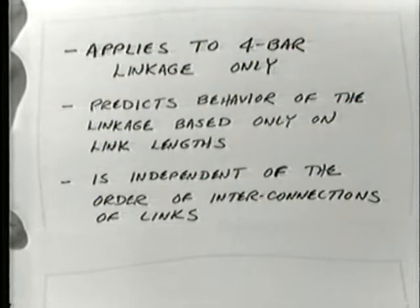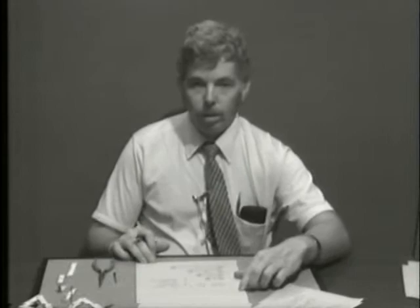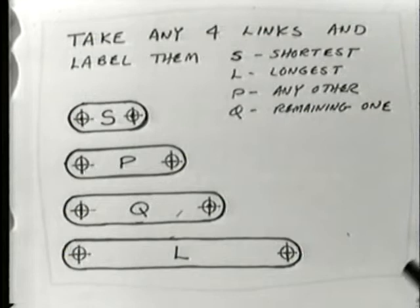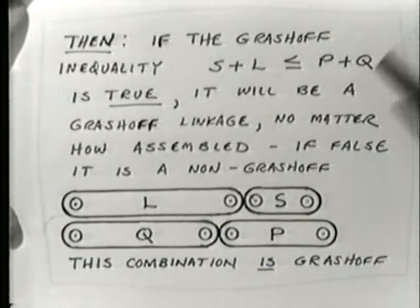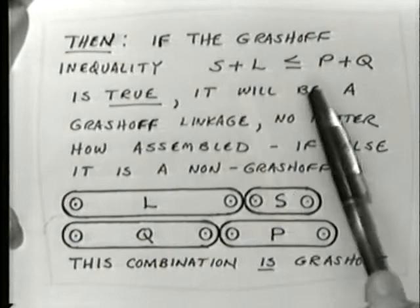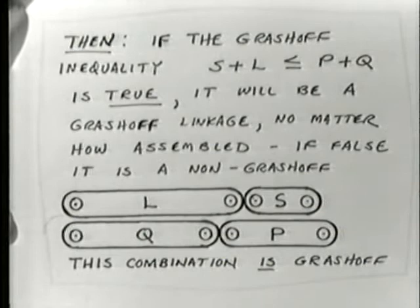The Grashoff condition is entirely independent of the order of interconnections of the links, and also independent of the inversion — that is, which link is grounded. If you take any four links and label them with S for shortest, L for longest, and the others P and Q, then if the sum of S and L is less than or equal to the sum of P and Q, it will be a Grashoff linkage no matter how you assemble it. If that inequality is false, it will not be a Grashoff linkage.